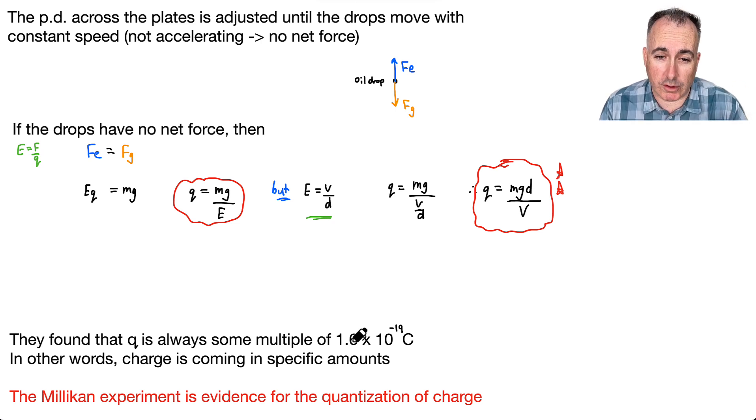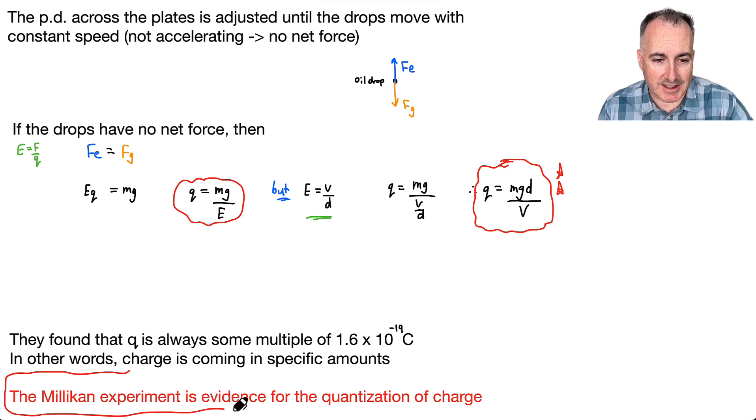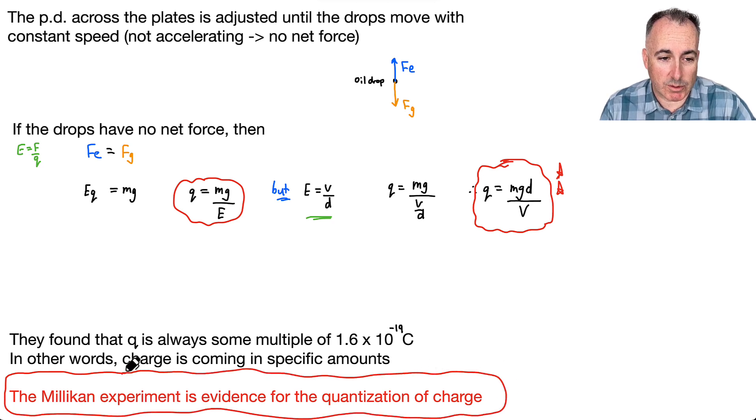Maybe it's one of those, or two of those, or three of those. But it's always a multiple of this number. And that is when we give these guys credit for figuring out, hey, this is evidence for the fact that charge is quantized. What do we mean by that?